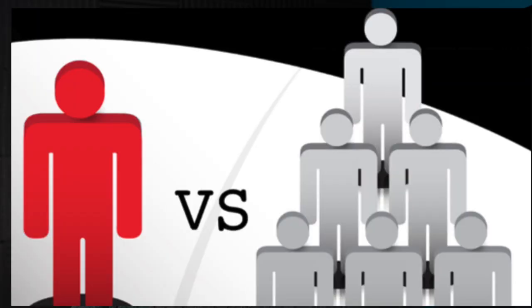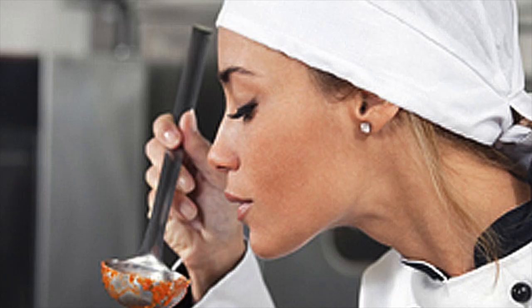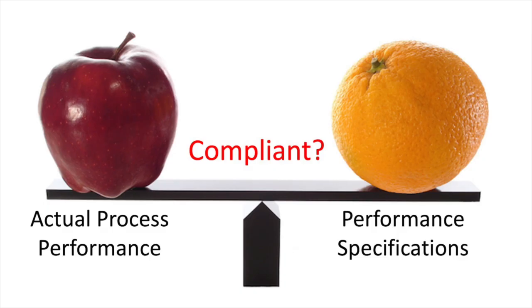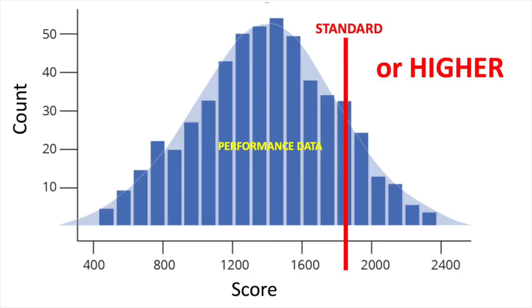Looking at one episode of care for a particular patient, the measurement and reporting is pretty straightforward: there's a performance specification and the actual performance on that case — you met the specification or you didn't. But when we're engaging in improvement science, we're usually focused on how well our process works overall on most all of our cases. We want to know if our process consistently meets the needs of patients or downstream users who depend on the outputs. So we'll usually take a batch of data from a given timeframe or a series of consecutive cases.